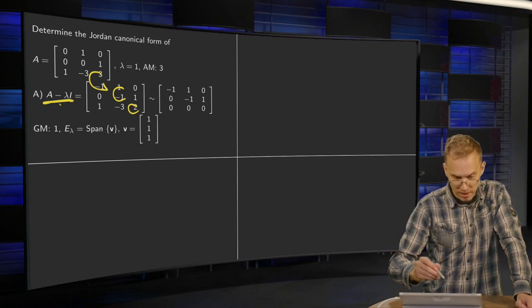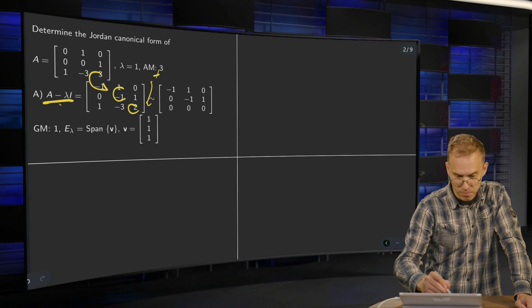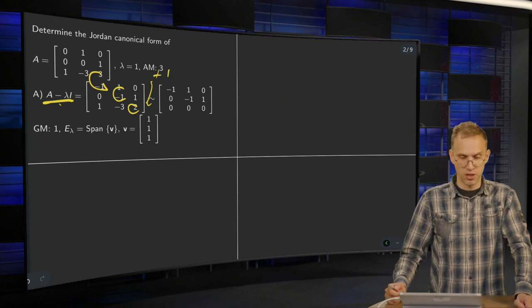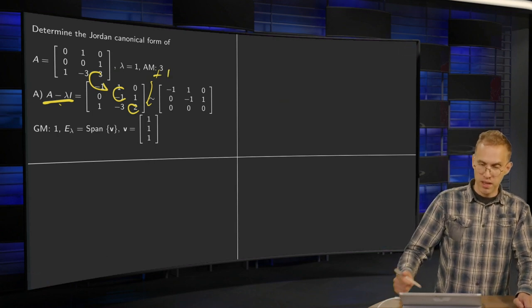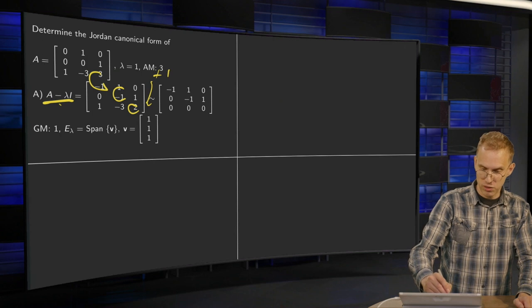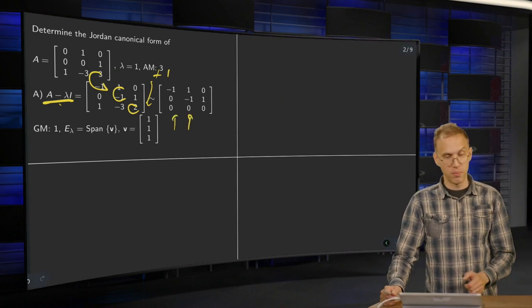We row reduce by adding the first row to the last one, and we see that we have two pivots, so one free variable.